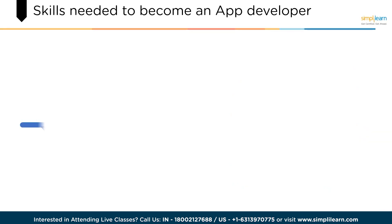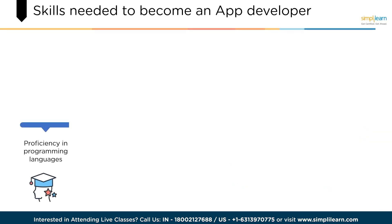Now let's understand the skills needed to become an app developer. To succeed as an app developer, one must possess both technical and non-technical skills. Some of the key competencies include proficiency in programming languages. App developers need to have a strong understanding of programming languages such as Java, Swift, Kotlin and Objective-C.